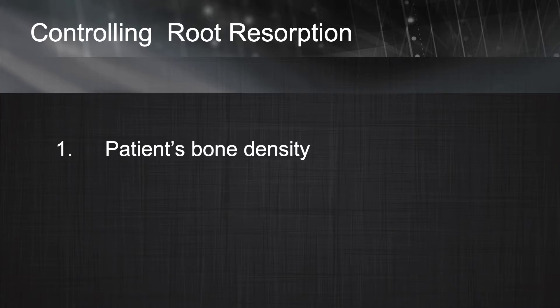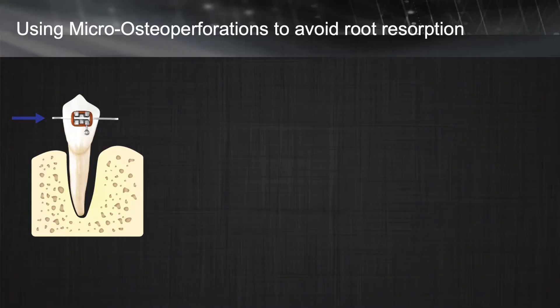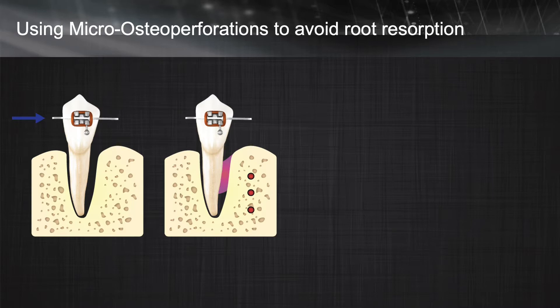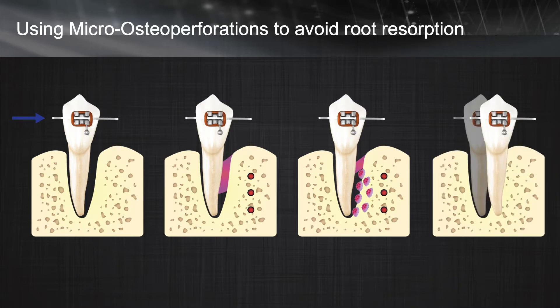Unfortunately, bone density is beyond our control. But recently it has been shown that by application of small perforations inside the bone, it is possible to decrease bone density. This procedure, called macro osteoperforation or MOPs, was invented here at CITOR Academy. During this procedure, small perforations cause a high magnitude of inflammatory markers in the area, bringing more osteoclasts in, which increases the rate of bone remodeling, temporarily decreasing bone density and allowing the tooth to move inside alveolar bone more easily.